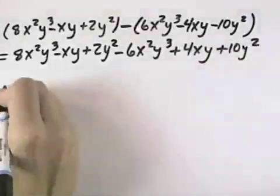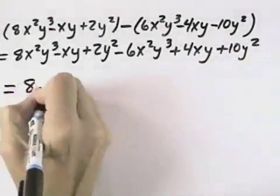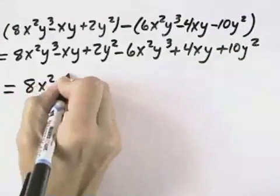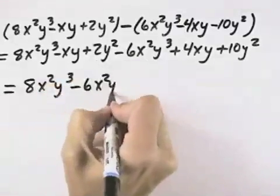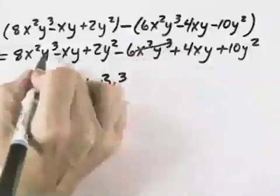At this point, we want to look for like terms to group together. So we have an x²y³ term, 8 here, and then we have a minus 6 of the same term, x²y³, so we can group those two together.